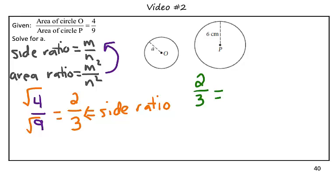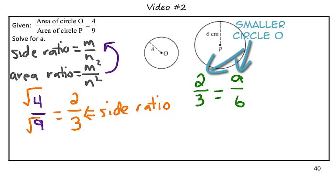Well, since 2 is in the numerator, 2 is referring to the smaller circle, since it's a smaller number. So therefore, A would go in the numerator, and 6 would go in the denominator.